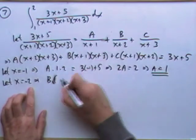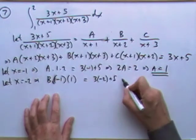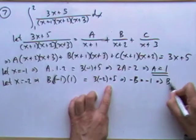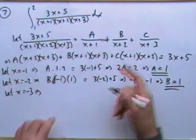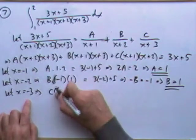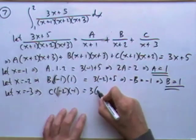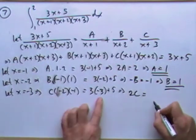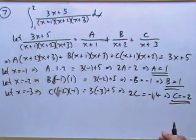Same for B: put x = -2, the others vanish, giving B times -1 times 1, so -B = -1, meaning B = 1. Then for C, let x = -3 to knock out the other two: C times -2 times -1, substituting into the expression gives 2C = -4, so C = -2.